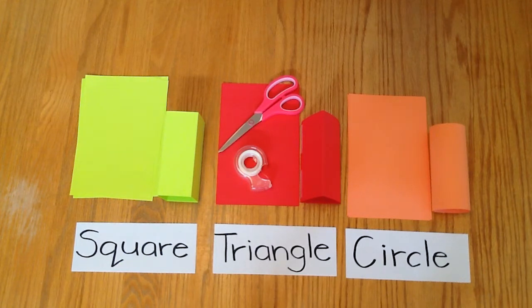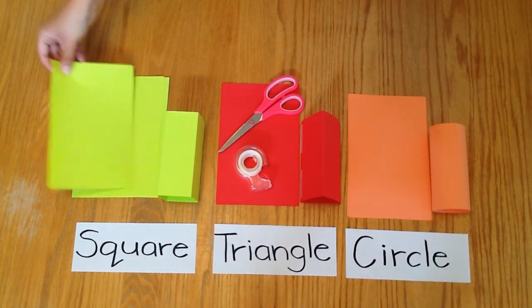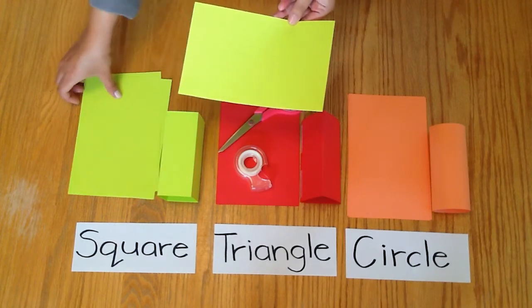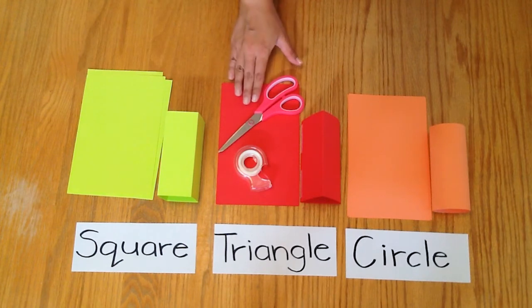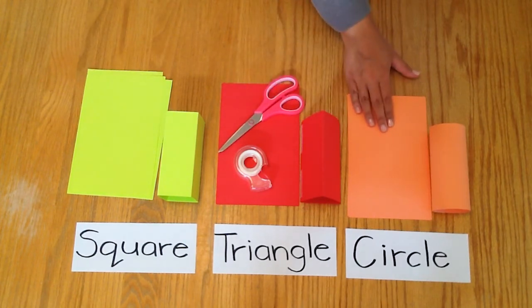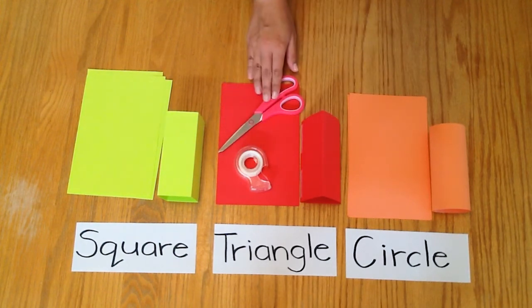We will now work on our second activity, which will be making paper blocks. Like our columns, we will be using the same three shapes and folding and we will be using much shorter paper blocks. For the paper blocks, you will need four pieces of paper cut in half for the square paper blocks, four pieces of half paper for the triangle paper blocks, four pieces of half paper for the circle paper blocks, tape and scissors.